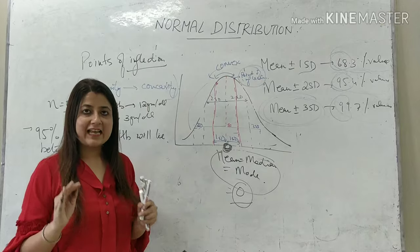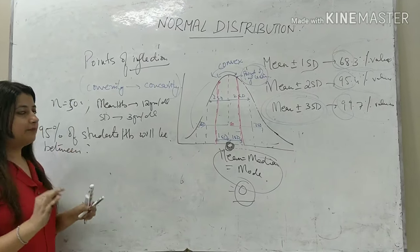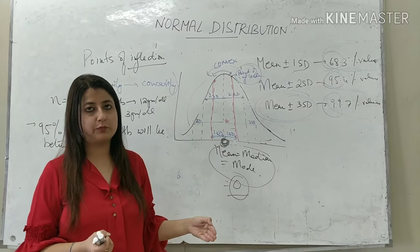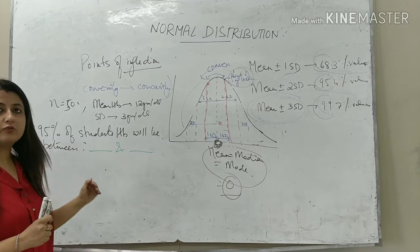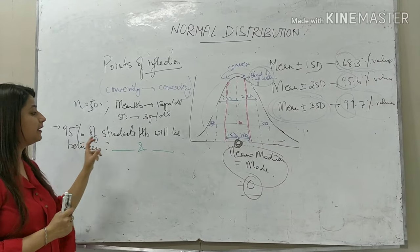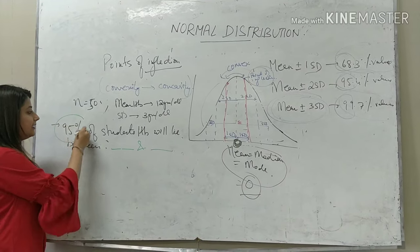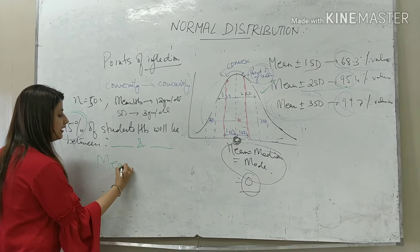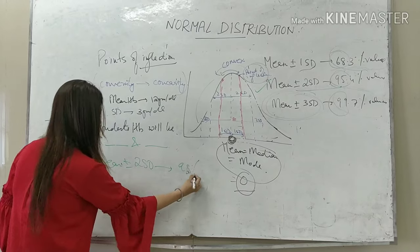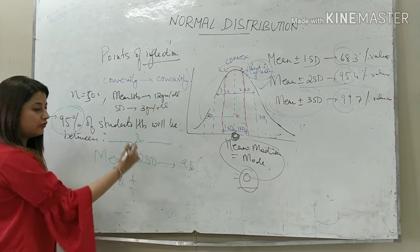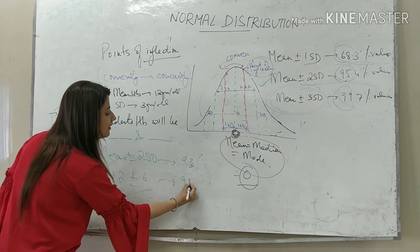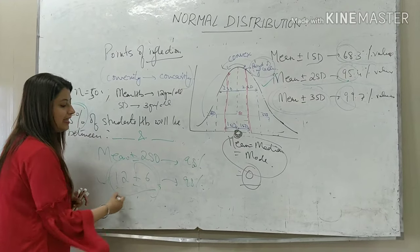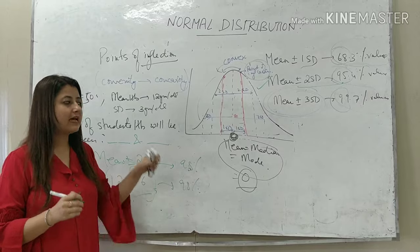This is asked in MCQs. For example: in a class of 50 students, mean hemoglobin follows a Normal Distribution with mean=12 g/dL and SD=3 g/dL. Question: 95% of students' hemoglobin will lie between what values? Since 95% corresponds to mean ± 2 SD, the answer is 12 ± (2×3) = 12 ± 6 g/dL. So 95% of students' hemoglobin lies between 6 and 18 g/dL.